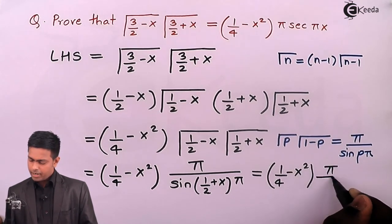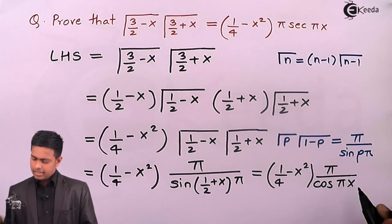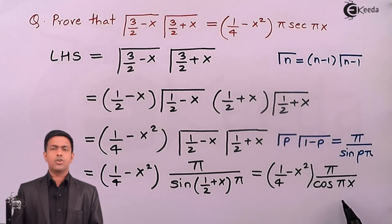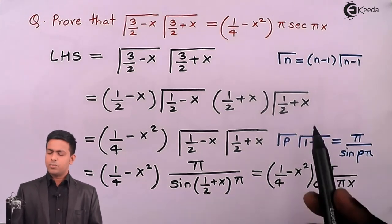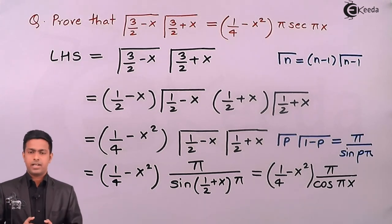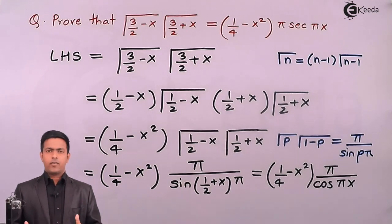Now it's just a single step: we have to take cos to the numerator. 1/cos will become sec, so we will get the value as π times sec πx. We have reached the value and the answer. We have completed this problem by using the properties of gamma function.